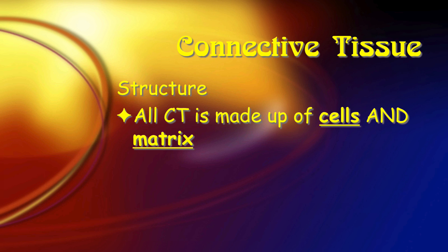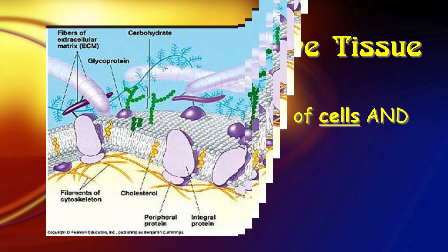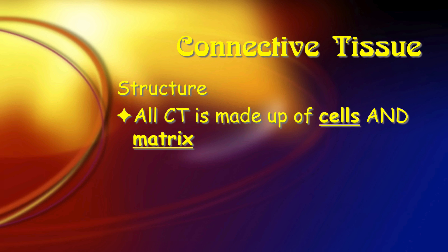Connective tissue has two main components: we have cells and we have matrix. Matrix is something we're going to find in most tissues a little bit. You heard extracellular matrix in introductory biology — this is a product of cells; cells make it. But many connective tissues have more matrix than cells.